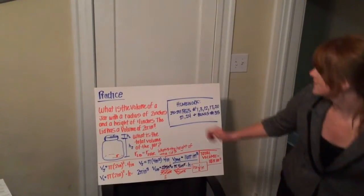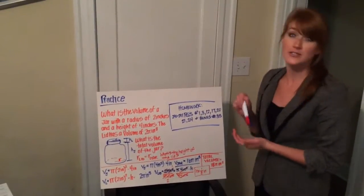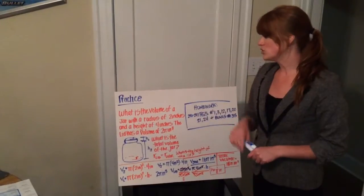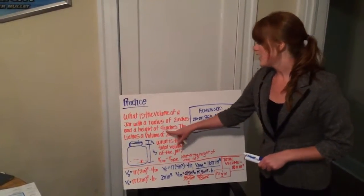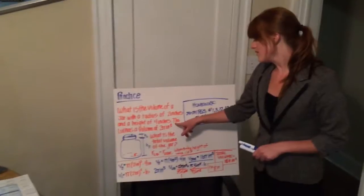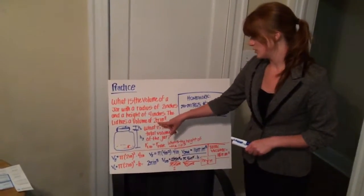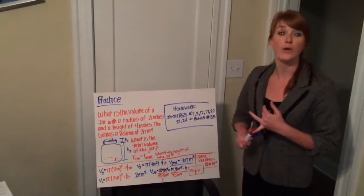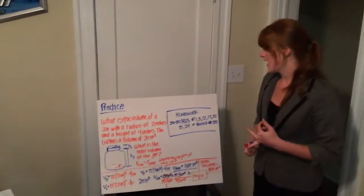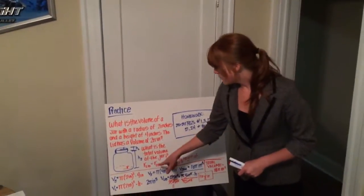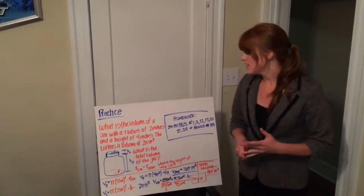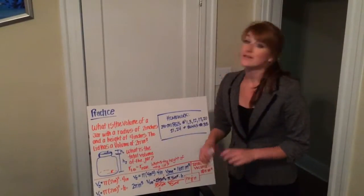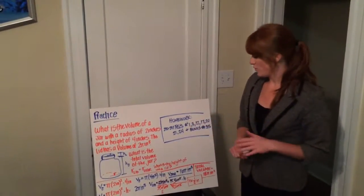Practice a lot of these at home and you can come with questions tomorrow. What is the volume of a jar with a radius of 2 inches and a height of 4 inches? The lid has a volume of 2 pi inches cubed. What is the total volume of the jar, and what is the height of the lid? Note that the radius of the lid equals the radius of the jar, so the figure is not drawn to scale — don't let that fool you.